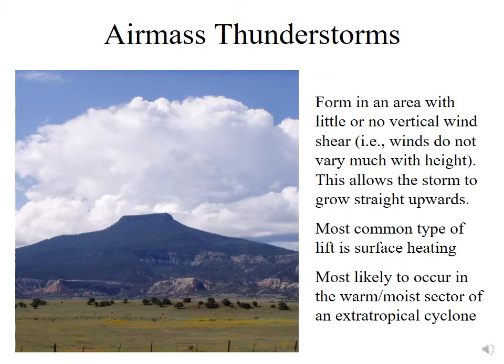Air mass thunderstorms form in an environment with almost no vertical wind shear, meaning the winds are not changing direction or speed with height. This allows those storms to grow straight up. The most common type of lifting mechanism associated with these thunderstorms is surface heating. They often occur in the tropics and can also occur in the warm sector of an extratropical cyclone.